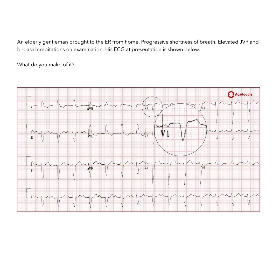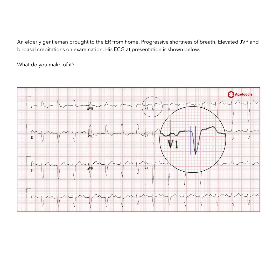The QRS complexes are wide and are overall negative in Lead V1. This is complete left bundle branch block.